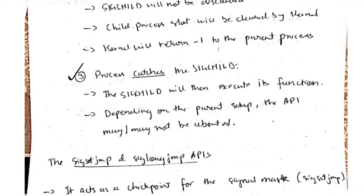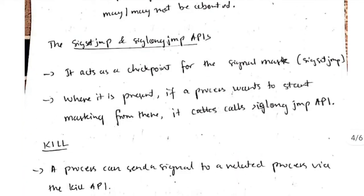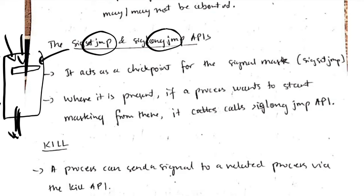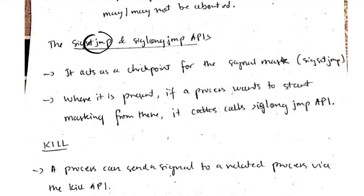The last option is to allow SIGchild to execute its functions, and based on the parent setup the API may or may not be aborted. Additionally, if at some point during execution there was a mask that you forgot to save, you can use SIGsetjmp to mark that mask. Then at any other point in time, if you want to resume execution from that marked point, you use the longjmp function. Marking is done by the setjmp function and resuming from that point is done using longjmp.